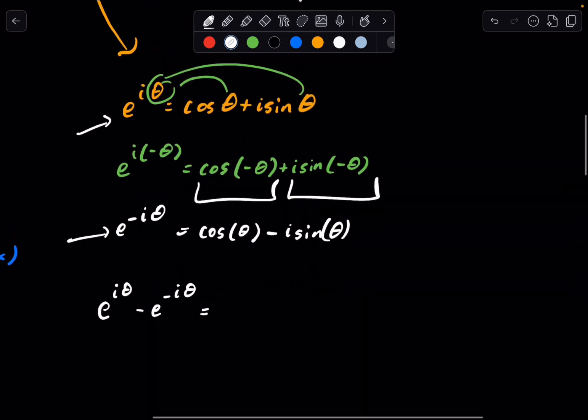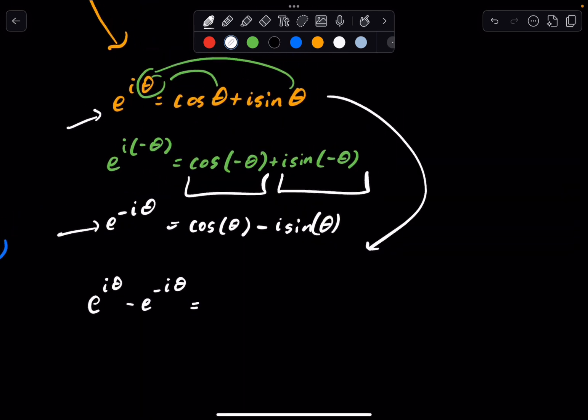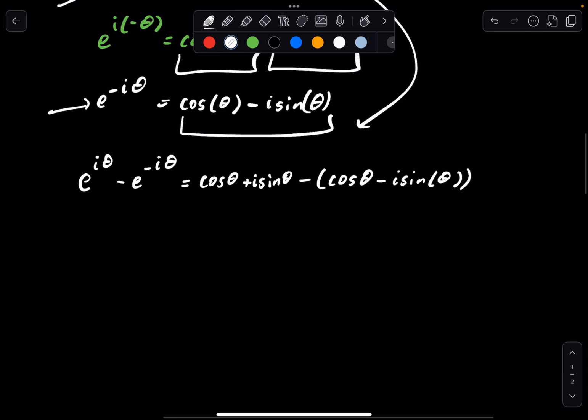So we have e^(iθ) minus e^(-iθ), just like this. Now we plug in what we had earlier. We have cosine of θ plus i sine θ minus all of this. So we have minus cosine of θ minus i sine of θ. Parentheses are important.